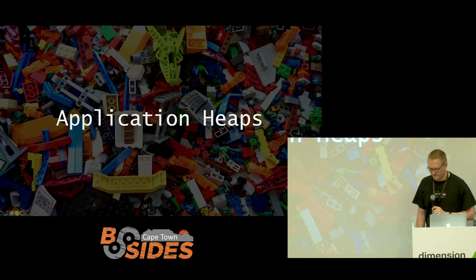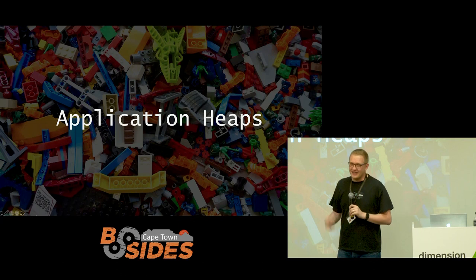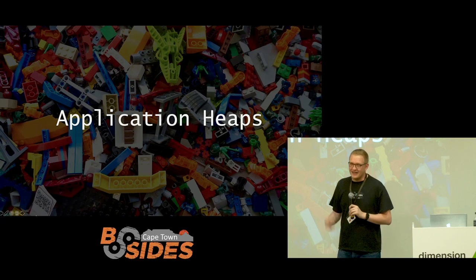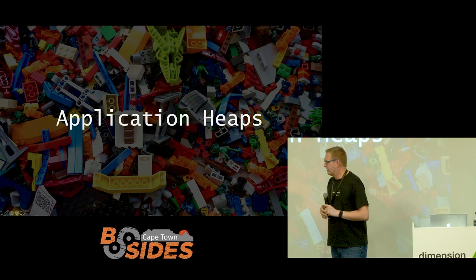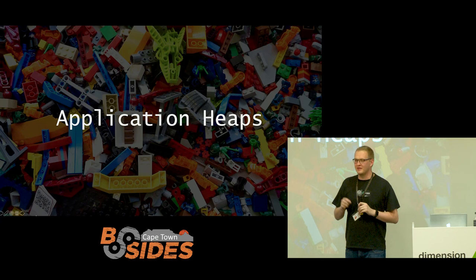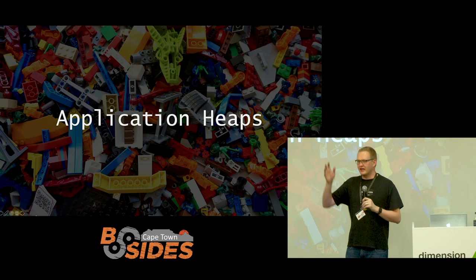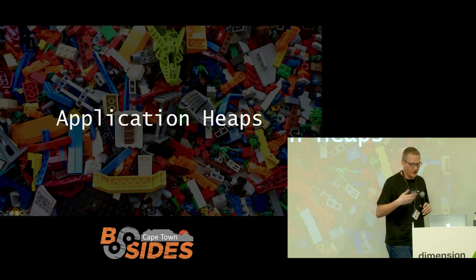Let's change gears and talk about application heaps. When you have an instance of, say, Java.io file, an instance of that object lives on the heap somewhere. Depending on the runtime and garbage collection rules, methods get called and values change, controlling some state. What we can do is actually enumerate those live instances and work with them as they are right now. This is different from changing app logic as it runs — we're working with a live instance of an object and want to modify properties or call methods on it outside of the app's actual flow.